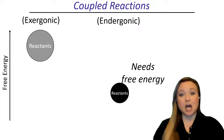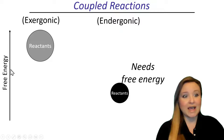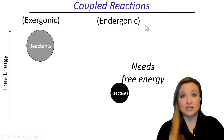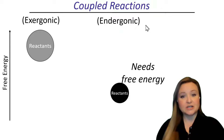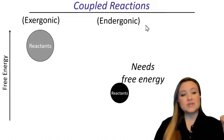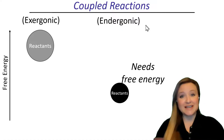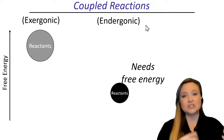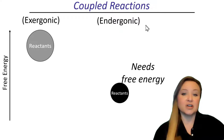Here's another way to look at coupled reactions. On our y-axis we see free energy — low free energy at the bottom and higher free energy at the top. On the left is an exergonic reaction, and on the right is an endergonic reaction. Exergonic reactions give off free energy, while the reactants of endergonic reactions need some free energy so they can react to form products. These two reactions are coupled together and happen at about the same time, because the exergonic reaction generates the free energy used to fuel the endergonic reaction.